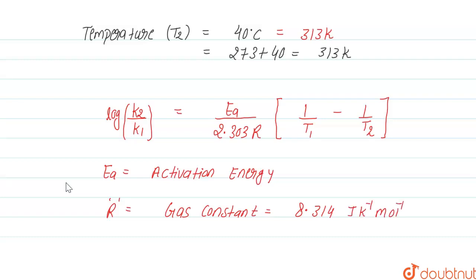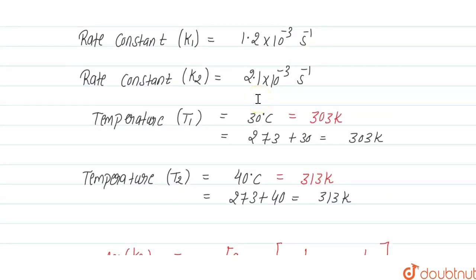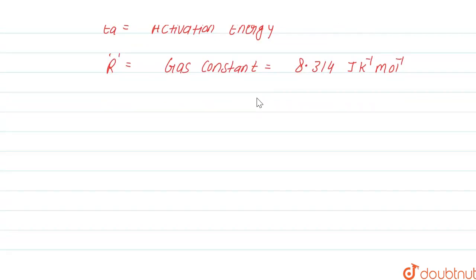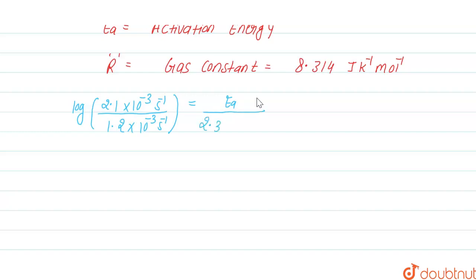Now we know the values of k1, k2, T1, and T2. Substituting: log(2.1 × 10⁻³ / 1.2 × 10⁻³) = Ea / (2.303 × 8.314 J K⁻¹ mol⁻¹) × (1/303 − 1/313), where T1 = 303 K and T2 = 313 K.